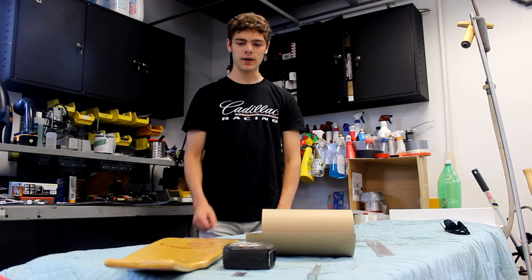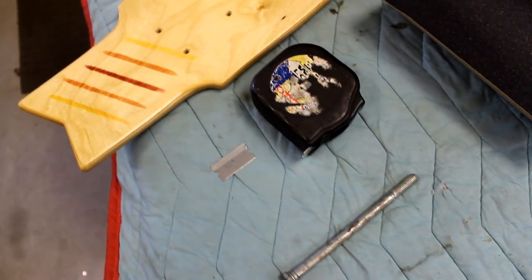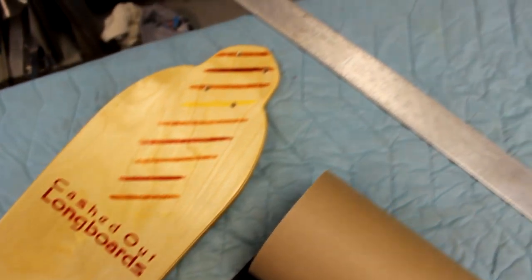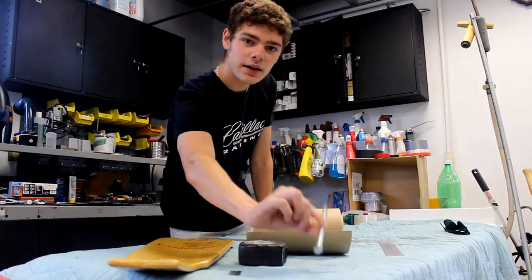Okay, so the materials you will need to install your grip tape are your board, obviously, the grip tape itself, a straight edge if you want any straight lines in your design, a tape measure, a razor blade, and a scrap piece of metal.